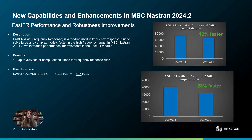Moving on to frequency response, the FastFR module in MSC Nastran 2024.2 now delivers up to 30% faster computational times for higher frequency response runs. This improvement significantly enhances the efficiency of solving large and complex models in dynamic analysis, drastically reducing simulation times.